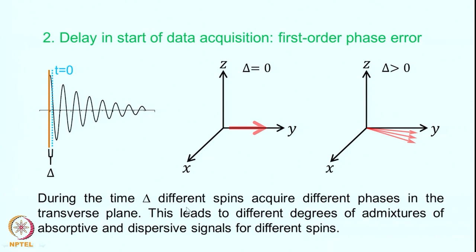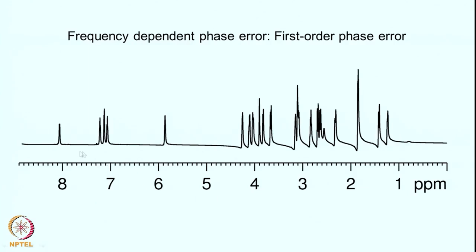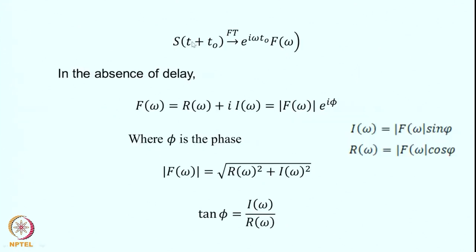This is called the first-order phase error, because the phase shift is different for different spins. The previous case — where all spins had the same phase offset due to the RF pulse — was called the zero-order phase error. Mathematically, the detected signal is written as S(t + t₀), where t₀ is the same as delta — the acquisition delay.